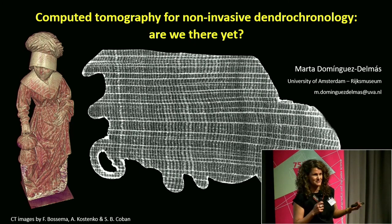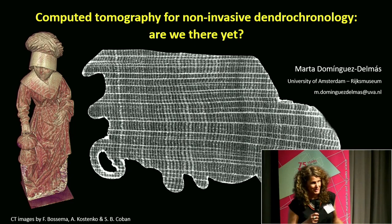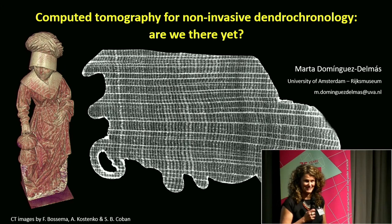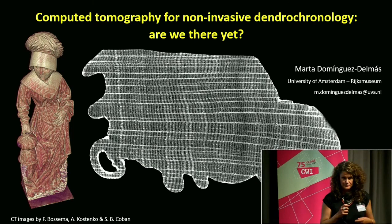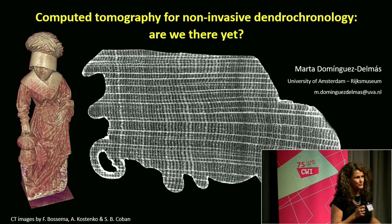This is what we want to see on a computed tomography image. Having reached this, the question is: are we there yet? Today I'm going to show you some examples. This image was produced here at the FlexRay lab — a wonderful collaboration we've been having since 2019 — and I'm going to show you some of the things we've done here and also at the Rijksmuseum.